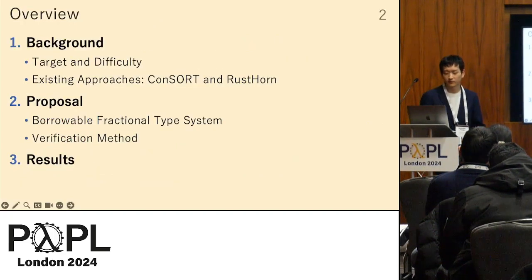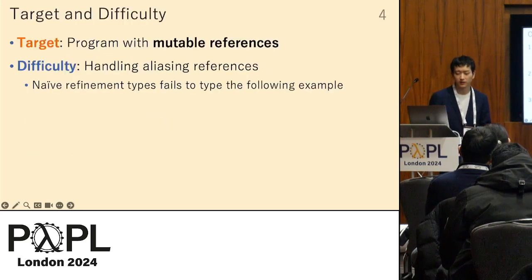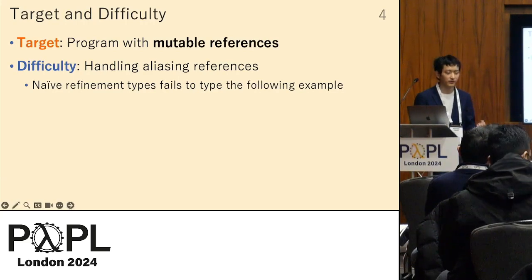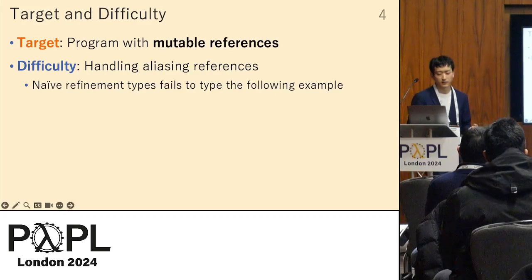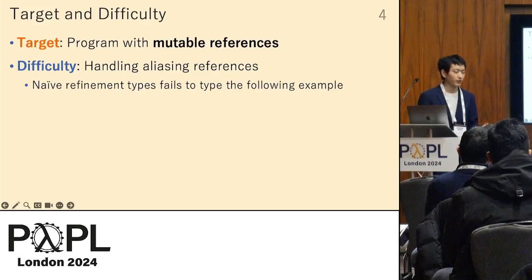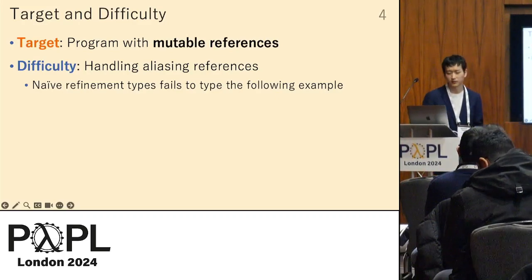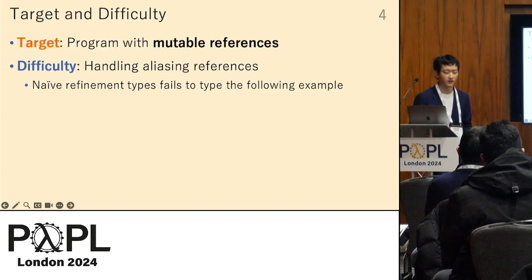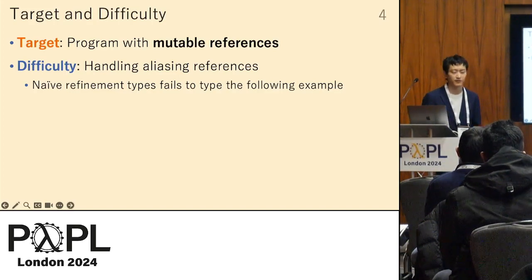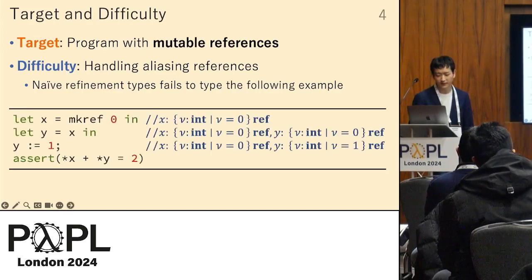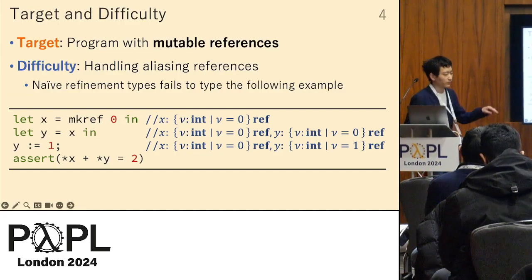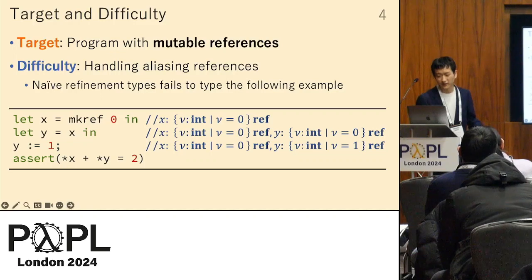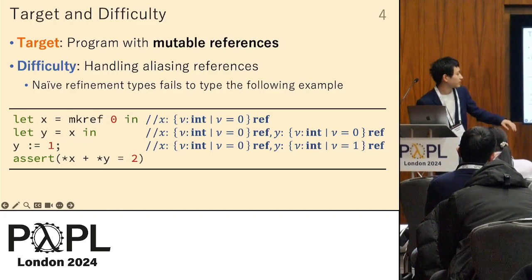The target of our research is programs with mutable references. This kind of program is known to be difficult to verify due to aliasing references. Here is a simple program with mutable references that a naive verification method fails to handle.